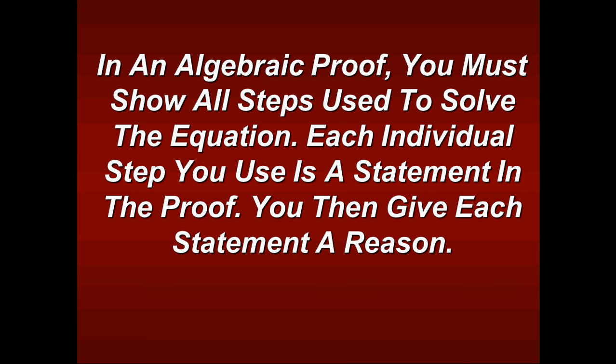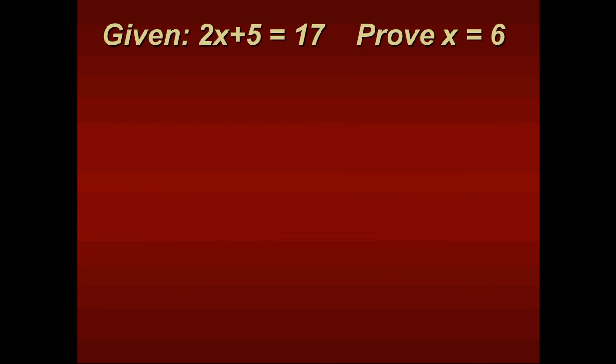So in an algebraic proof, you must show all steps used to solve the equation. So we're doing one step at a time. Each individual step you use is a statement in the proof. So that's what I was pointing out about solving the equation. Each step is a statement. You then give each statement a reason. So if we're doing the distributive property and you're showing yourself multiplying it, that reason would be the distributive property. Without explaining it too much, I'm going to go over this proof.